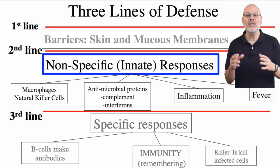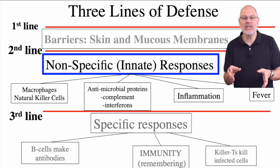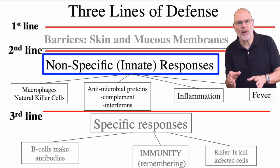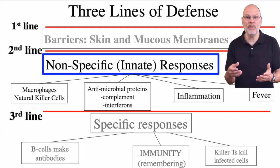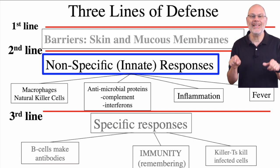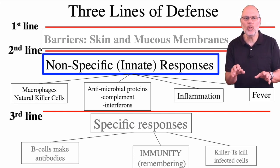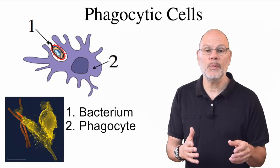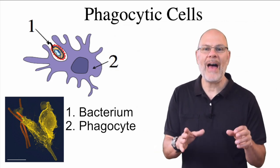The next layer consists of non-specific responses. These are also called the innate responses, and that's because you're born with them. That's in contrast to the other type of immunity — acquired or specific immunity — which we'll learn about in the next video in this series. So scan these four categories, and then we'll go into each of them in more detail. The first part of the non-specific responses that we'll discuss are a group of cells called phagocytes.